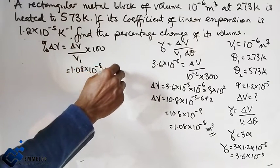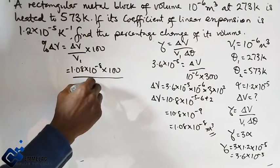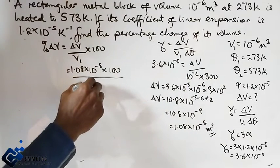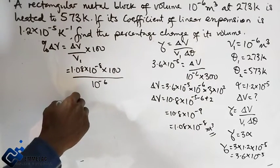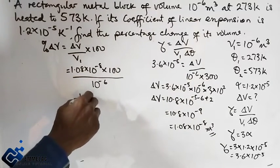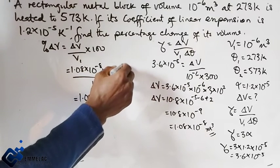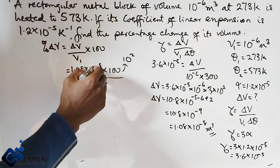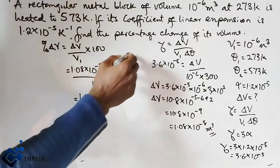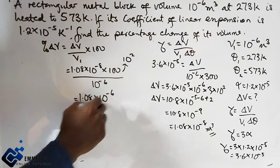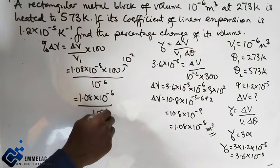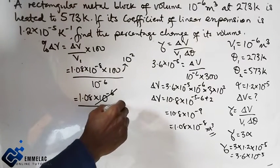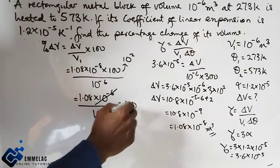This gives us 1.08×10^(-8+2) over 10^-6, which equals 1.08×10^-6 over 10^-6. We cancel these, which leaves us with 1.08%. This is the final answer.